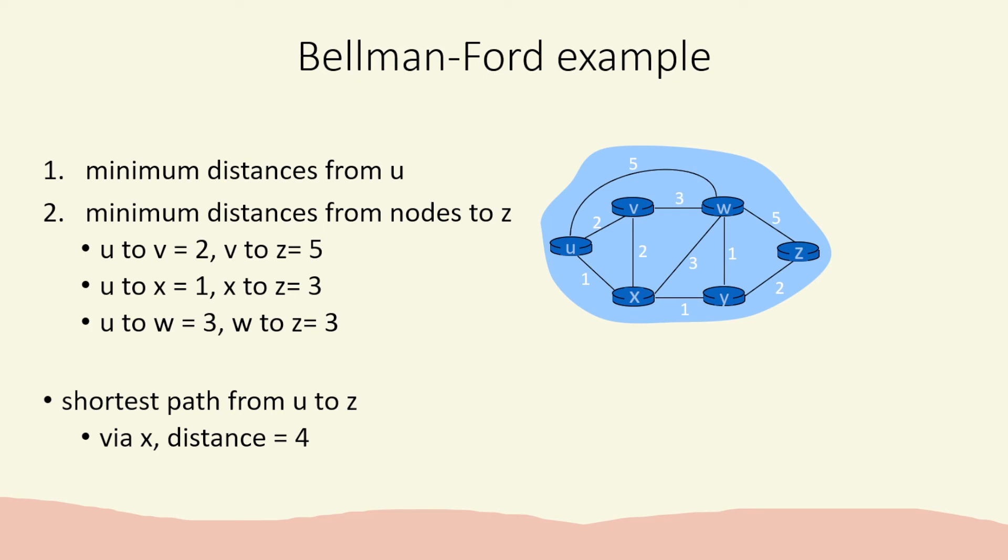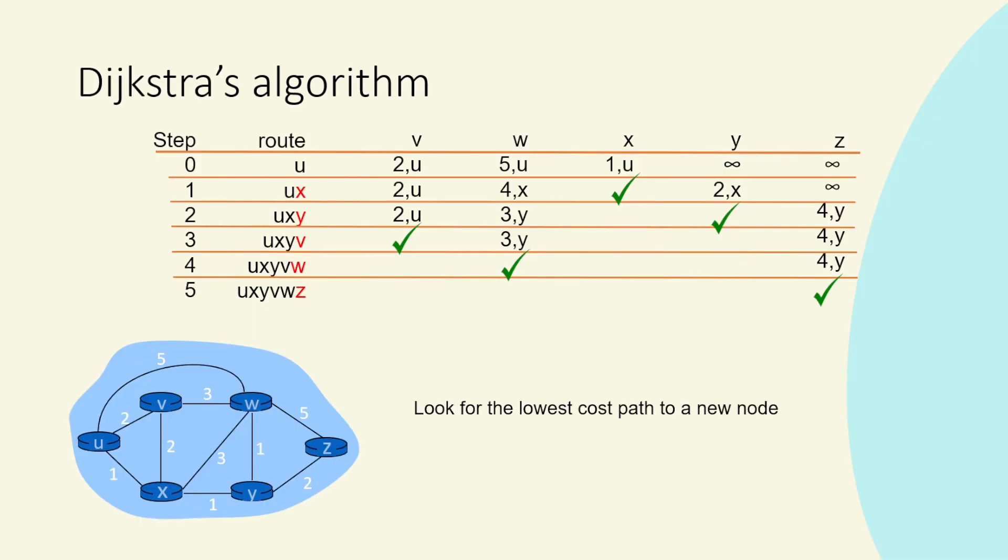Another method would be Dijkstra's algorithm. So here we go through steps. So we're looking from U. We go to a neighbor. We've got X. So we can go to X in the shortest route of 1. Then what else can we go? We can go to Y, and we can get to Y in 2. Then we can go to V. V we can get in 2 as well. Now we can get to W. The shortest route from W is via Y, which is a cost of 4. And if we get to Z, we've also got a cost of 4 through Y. So that's our shortest path, our lowest cost path. That's using Dijkstra's algorithm.